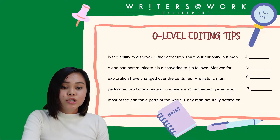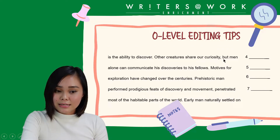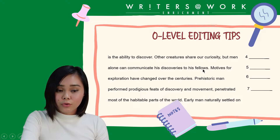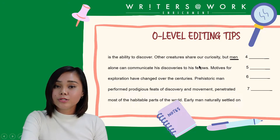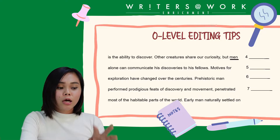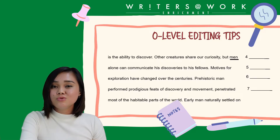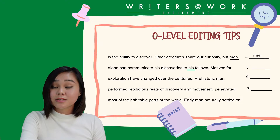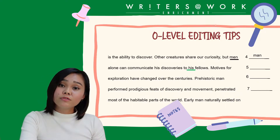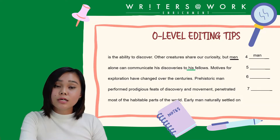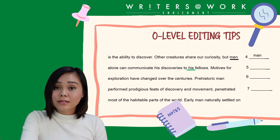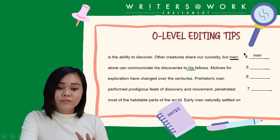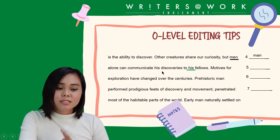Other creatures share our curiosity, but men alone can communicate his discoveries to his fellows. The error here is the word 'men'. If you want to talk about all human beings in general, you use the word 'man'. An additional clue is the word 'his' — that's singular. And at the beginning of the passage it uses 'man', so that gives you a clue to use 'man' here to refer to all human beings in general.